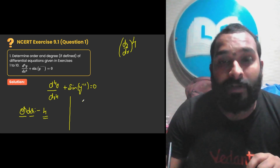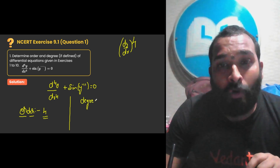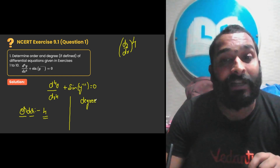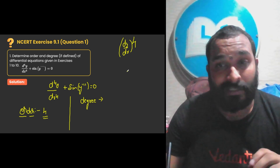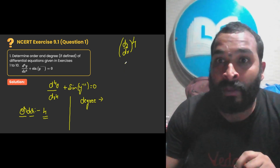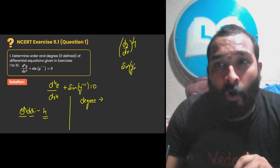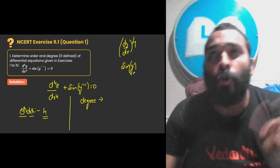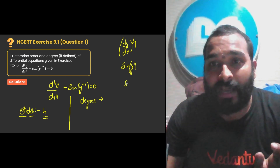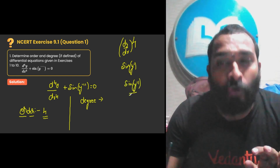Now let us discuss about degree. You can notice here it is not a polynomial function in its derivatives. What does it mean? If you have sine of y dash — that is a derivative of y as a function of any other function, like log of y dash, sine of y dash, sine of y double dash — in that case your degree will not be defined.